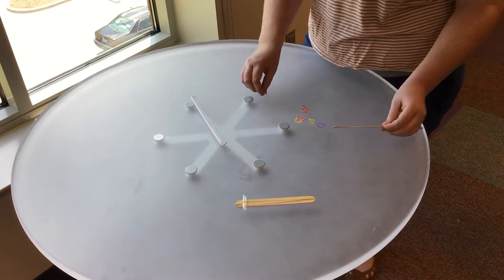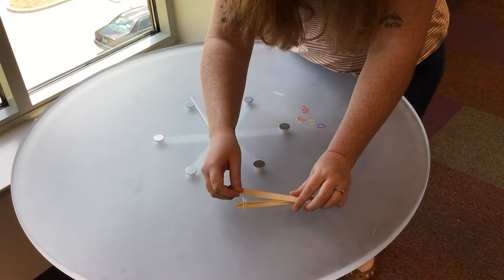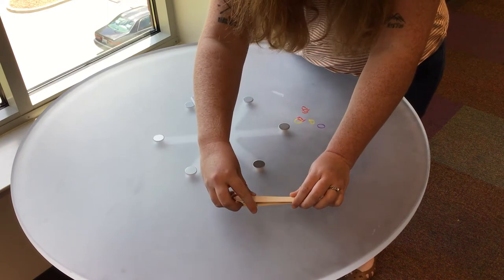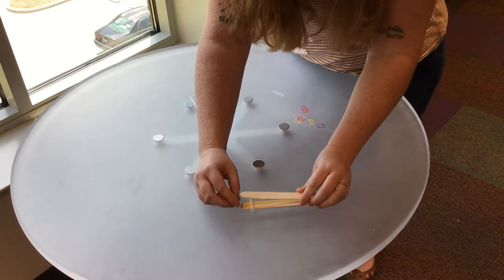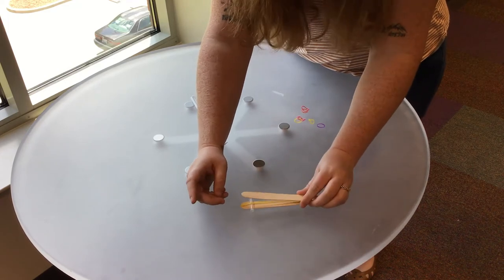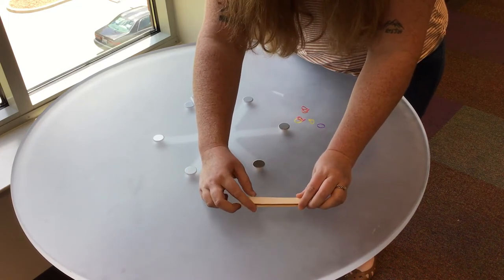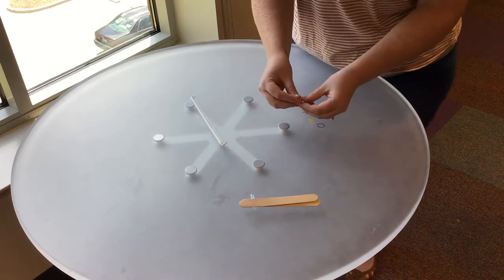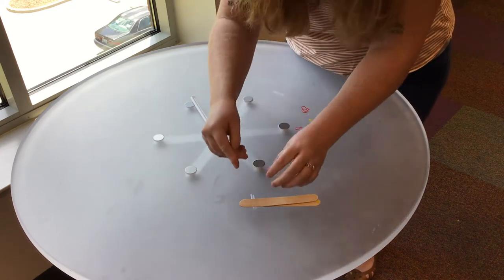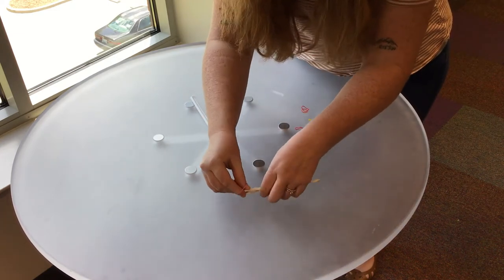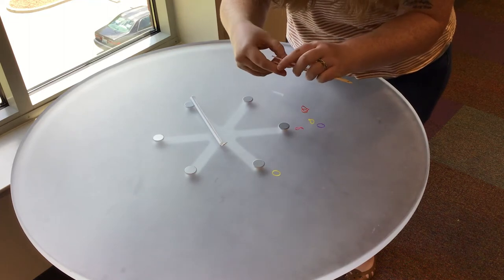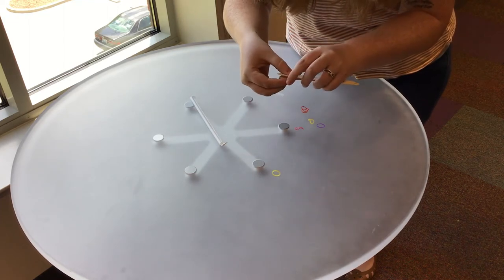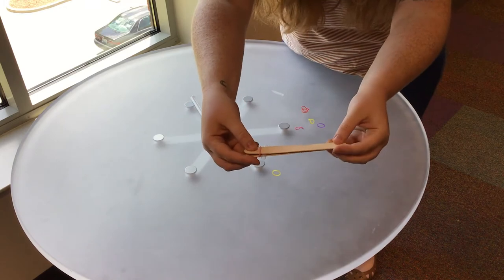Now we're going to put our next craft stick on top of our rubber band and our straw and we are going to attach it with a small rubber band. I'm going to go to the end and wrap it around. So it looks like this.